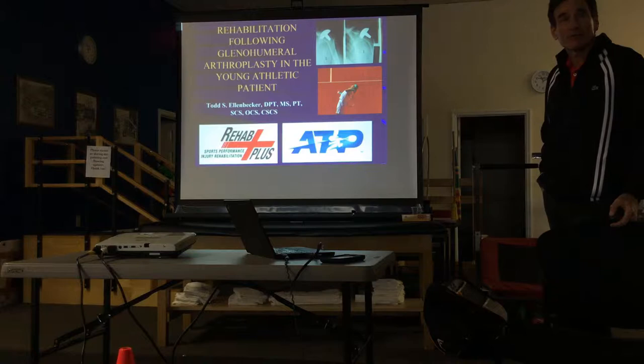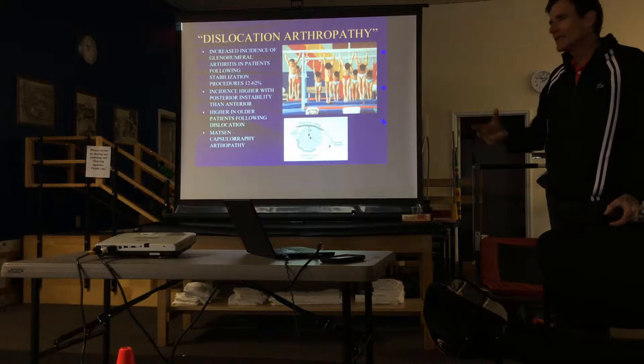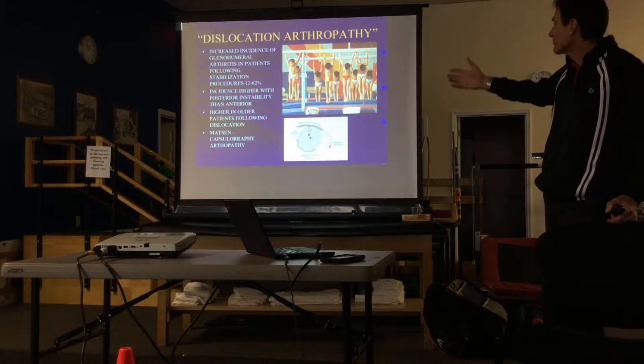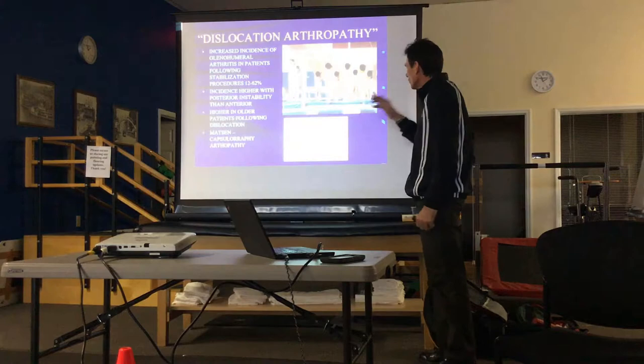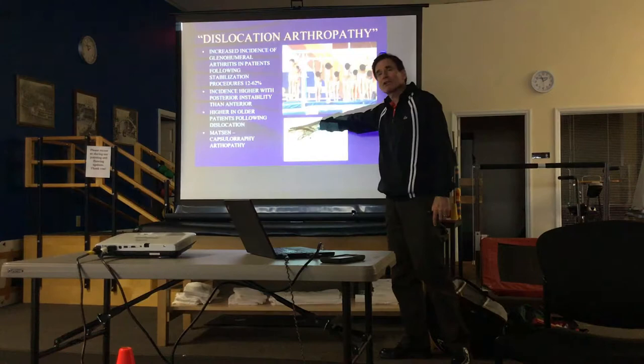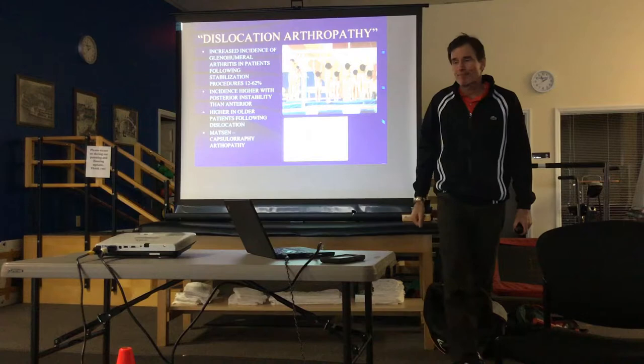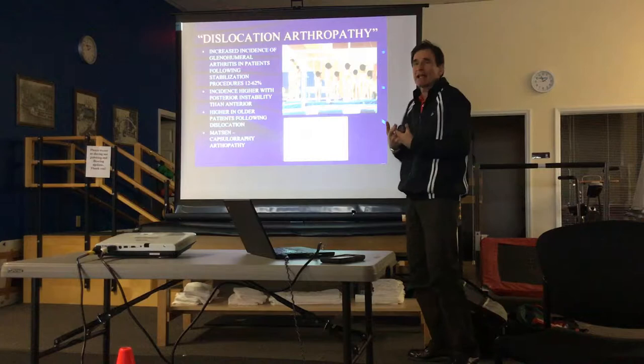There are a lot of things that can lead to somebody having a prematurely arthritic shoulder, and one of them is instability. This is called dislocation arthropathy. Dr. Mattson coined that term, as well as capsulorrhaphy arthropathy. If you have an instability procedure where you're left with a tight anterior capsule and you go into external rotation, you're going to have a lot of obligate posterior translation — the humeral head shifts posteriorly and essentially goes out the back.